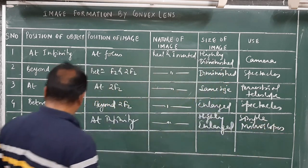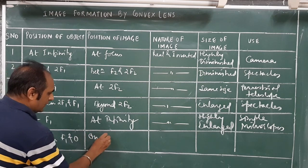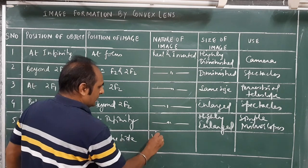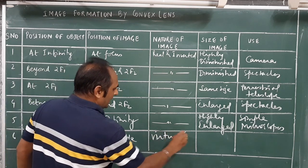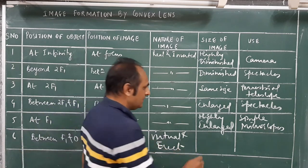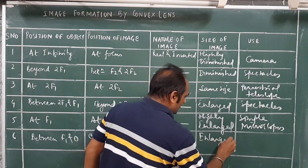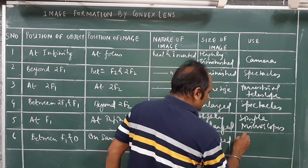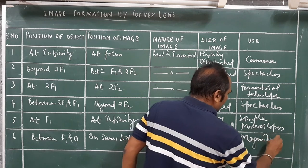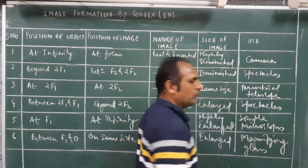Finally, if the object is between f1 and the optical centre, the image is formed on the same side, virtual and erect, and enlarged — used as a magnifying glass by a goldsmith. Thank you.